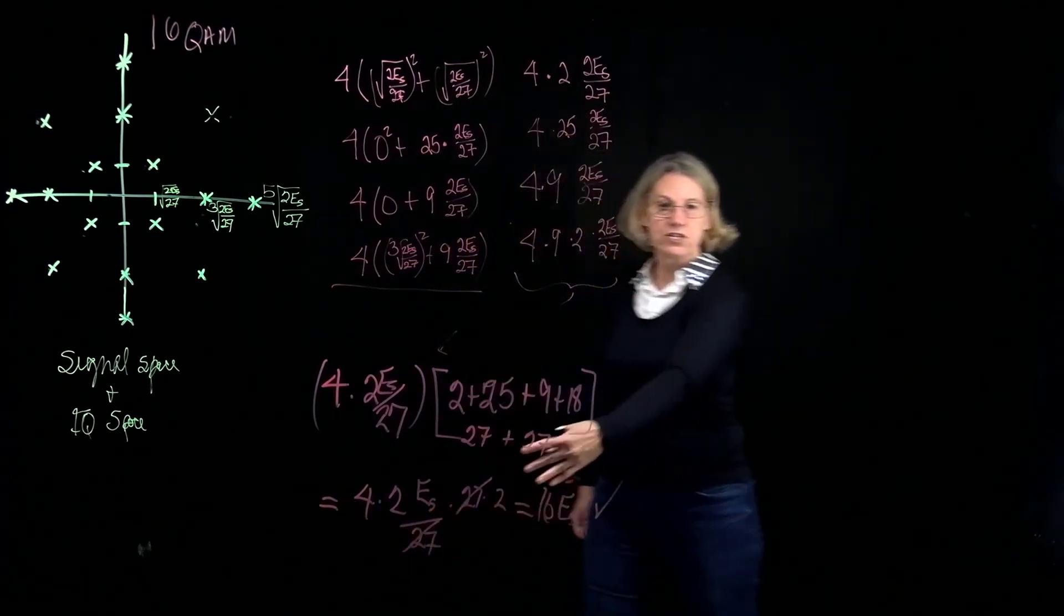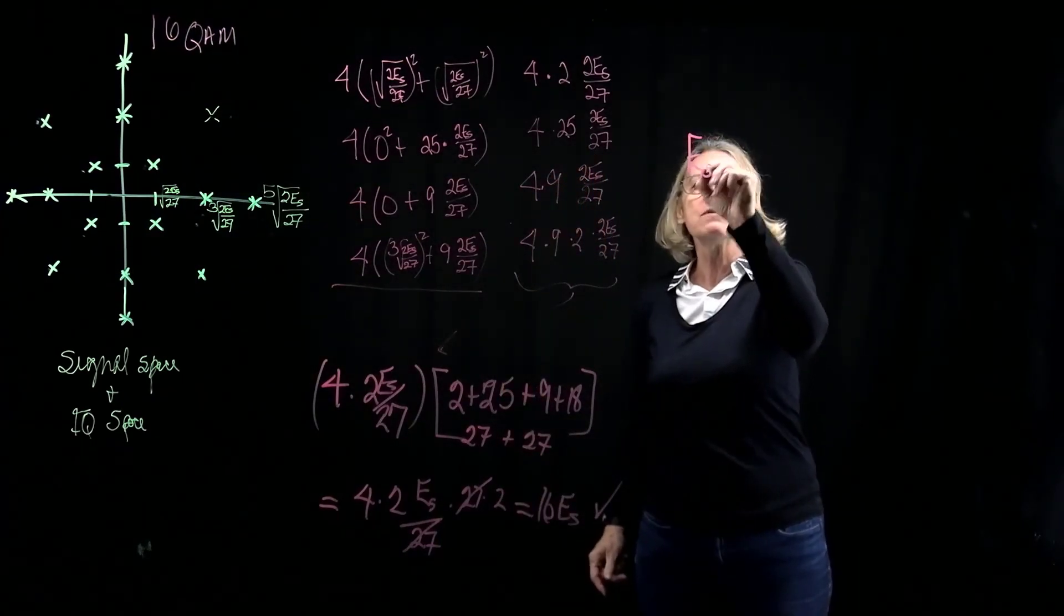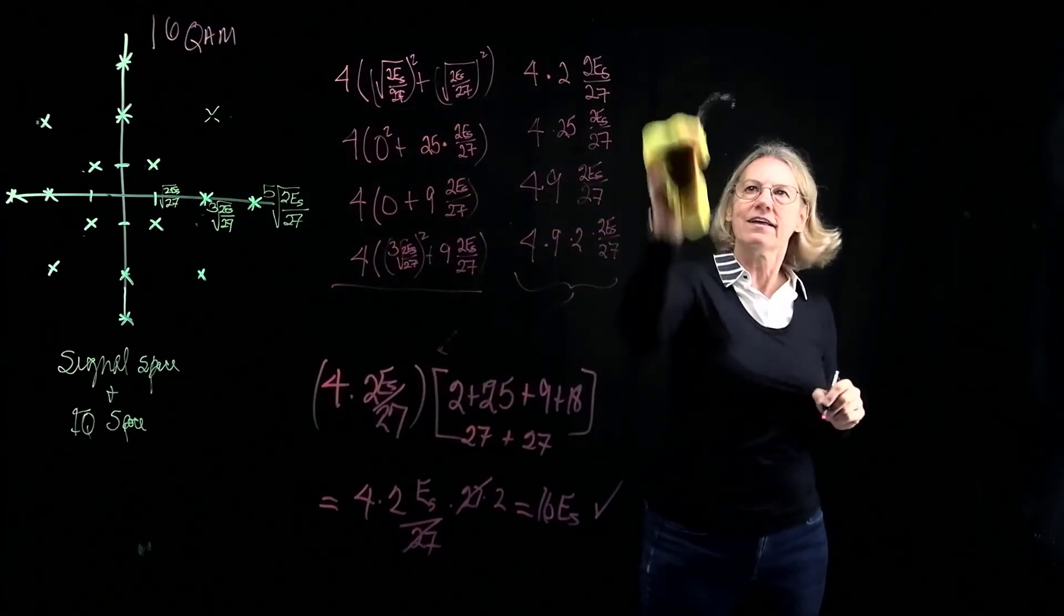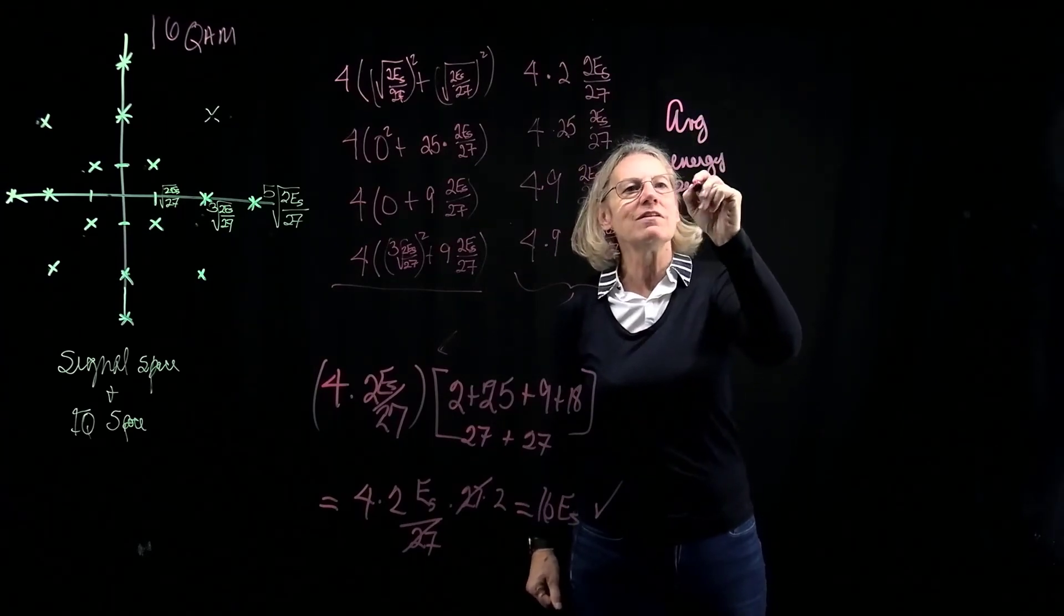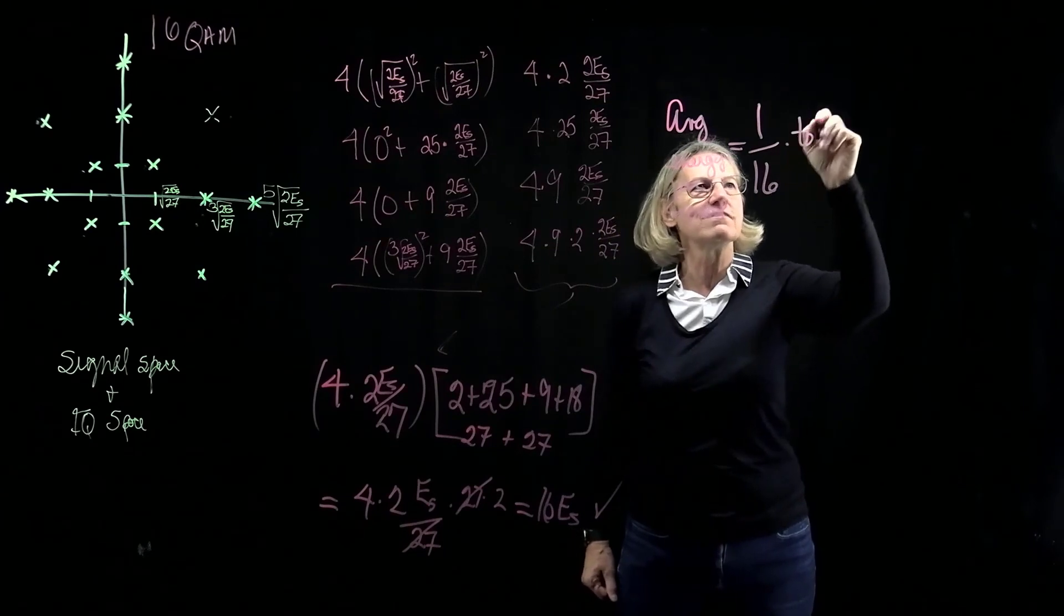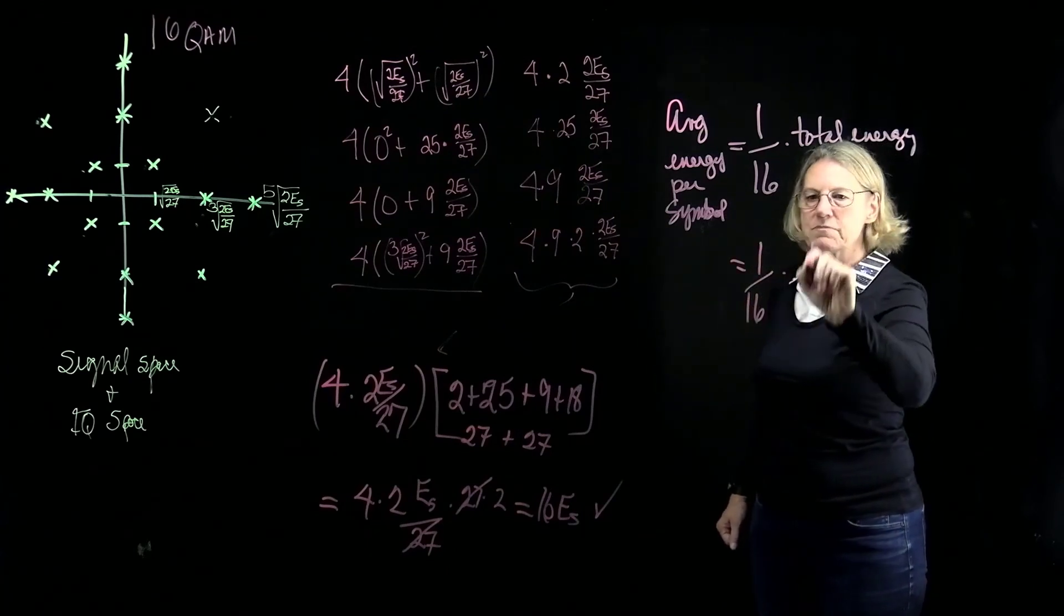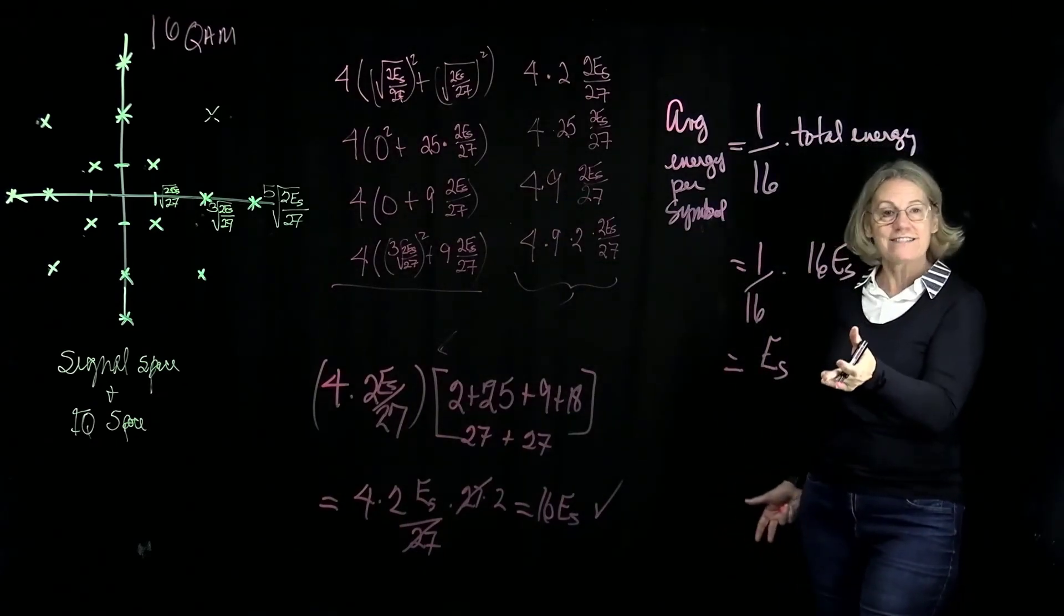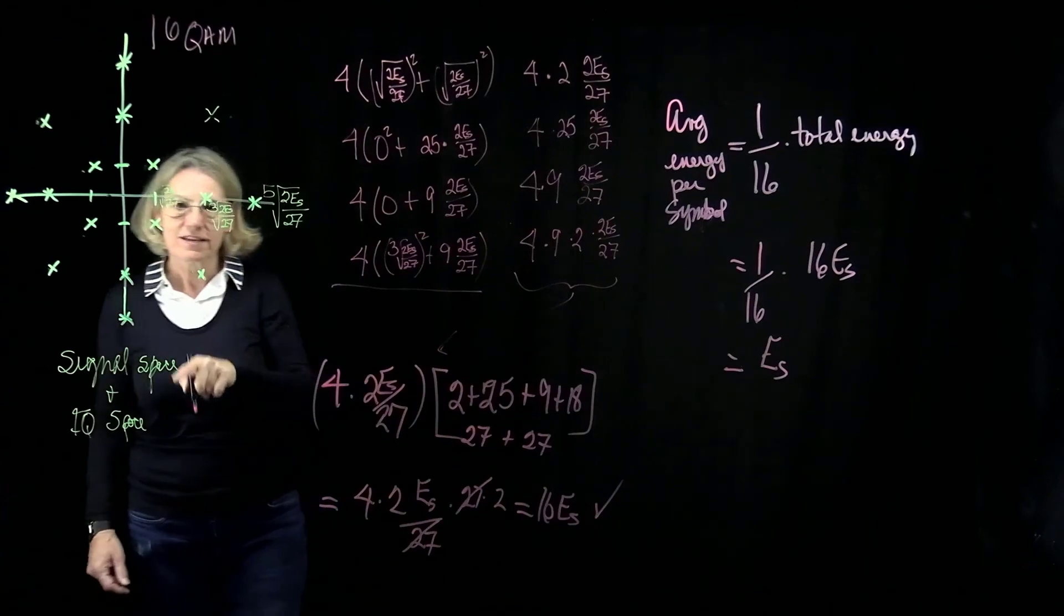So that's the total energy for the whole constellation. And if I was going to look at the average energy per symbol, the average energy per symbol is equal to 1 over 16 times the total energy. And indeed, that would be 1 over 16 times 16ES, which of course gives us ES. And that means that the ES really is the average energy per symbol. And that means that this original set of coordinates is the right set of coordinates, and we are indeed in signal space.